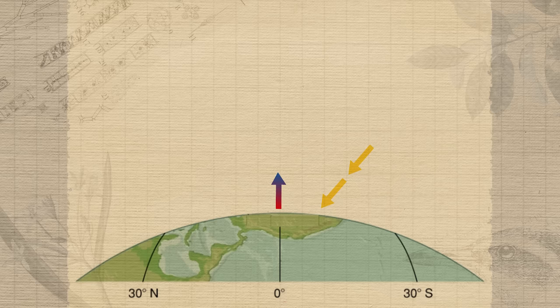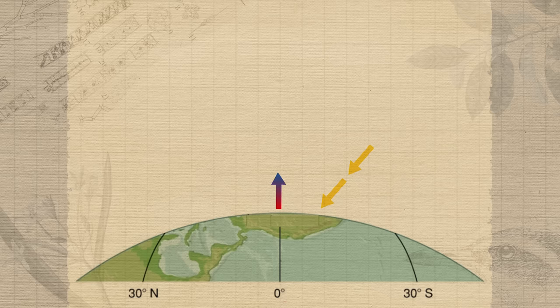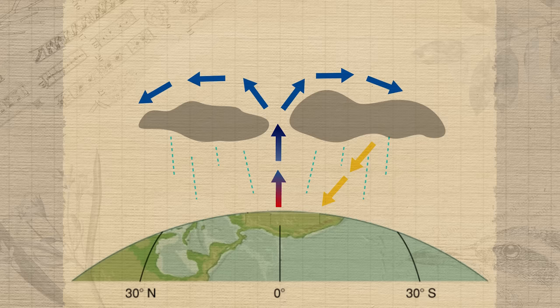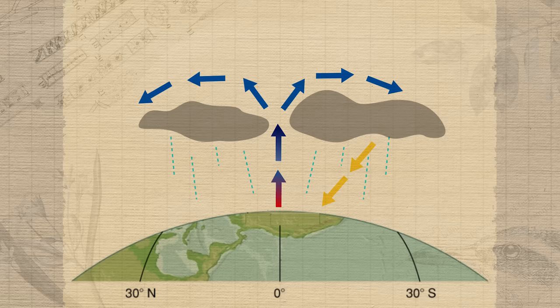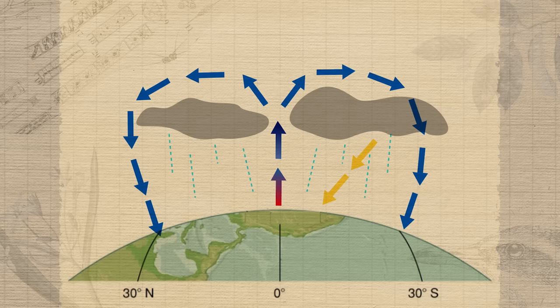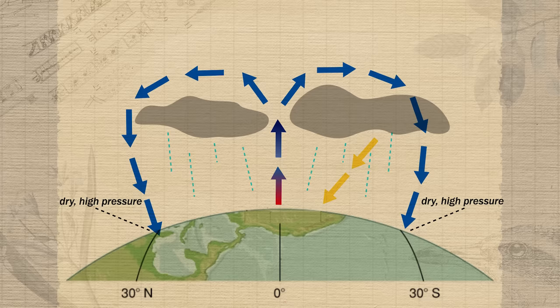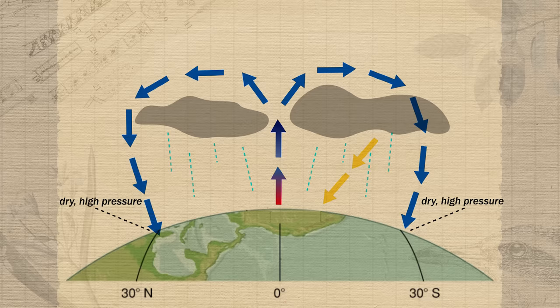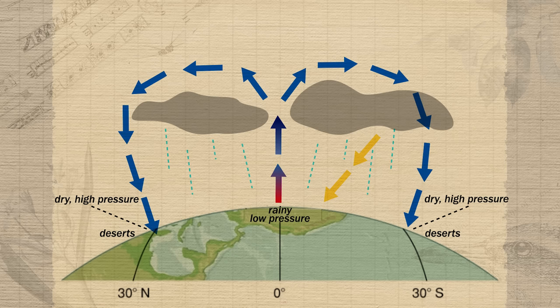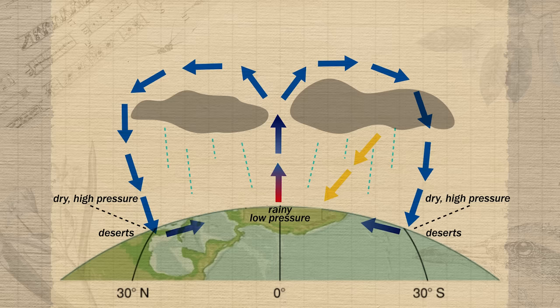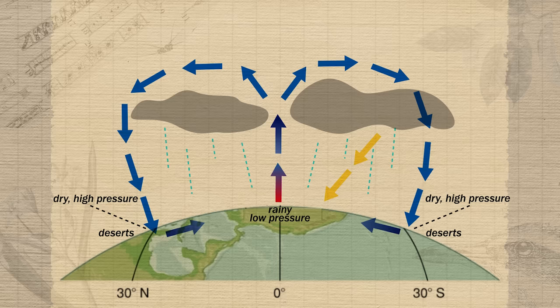Starting at the equator, these properties combine to give us the Hadley cell. Because the Sun's rays strike the equator most directly, the air here is warmer and holds more moisture. This warm air rises, expands, and cools, causing moisture to condense and fall as rain. That air then spreads out and eventually sinks back down around 30 degrees north and south. Because this air has lost most of its moisture, 30 degrees north and south experience very dry, high-pressure conditions — this is where many of Earth's deserts form. Air then flows back from high pressure at 30° to low pressure at the equator.